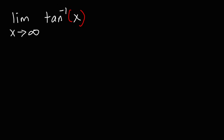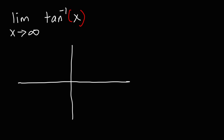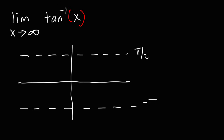Consider this problem: What is the limit as x approaches infinity of the inverse tangent of x? How can we find the answer? It helps to know what the graph of inverse tan, or arctangent of x, looks like. There are two horizontal asymptotes: y equals pi over 2, and y equals negative pi over 2.